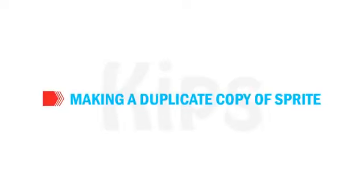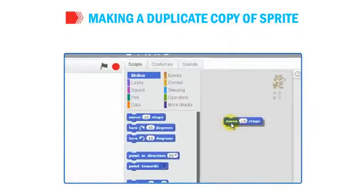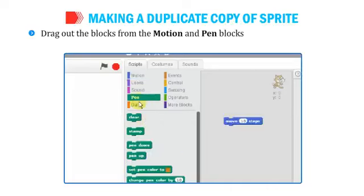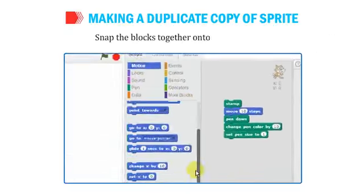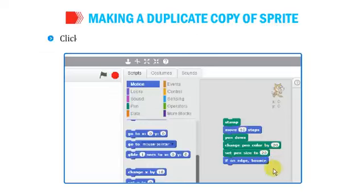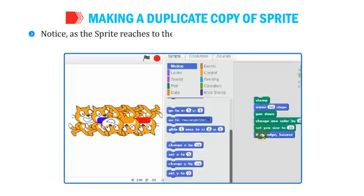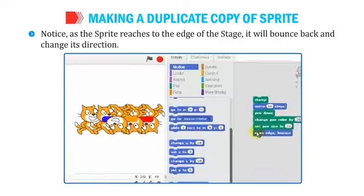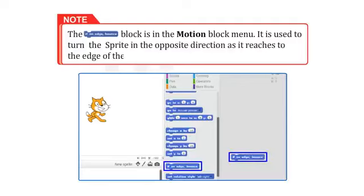To create a duplicate copy of the sprite, the Stamp block is used. Drag out the blocks from the Motion and Pen Blocks palette, snap them together on the script area, and change the values as shown. Click on any block to create the duplicate copy of the sprite. Notice that as the sprite reaches the edge of the stage, it will bounce back and change its direction. The If On Edge Bounce block, found in the Motion Block menu, is used to turn the sprite in the opposite direction when it reaches the edge.